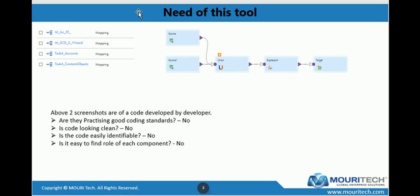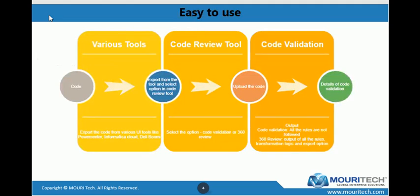This tool will address all those questions we raised. The tool is very easy to use — it works in a simple way. You need to export the code, upload the code, and the code validation tool gives you all the details — whether it has followed proper naming conventions or not. If you go to 360 Review, it provides the rules implemented, the formulas, the transformations, the sources, the targets, and the naming conventions. It's a simple three-step process: export the code, upload the code, get the details.